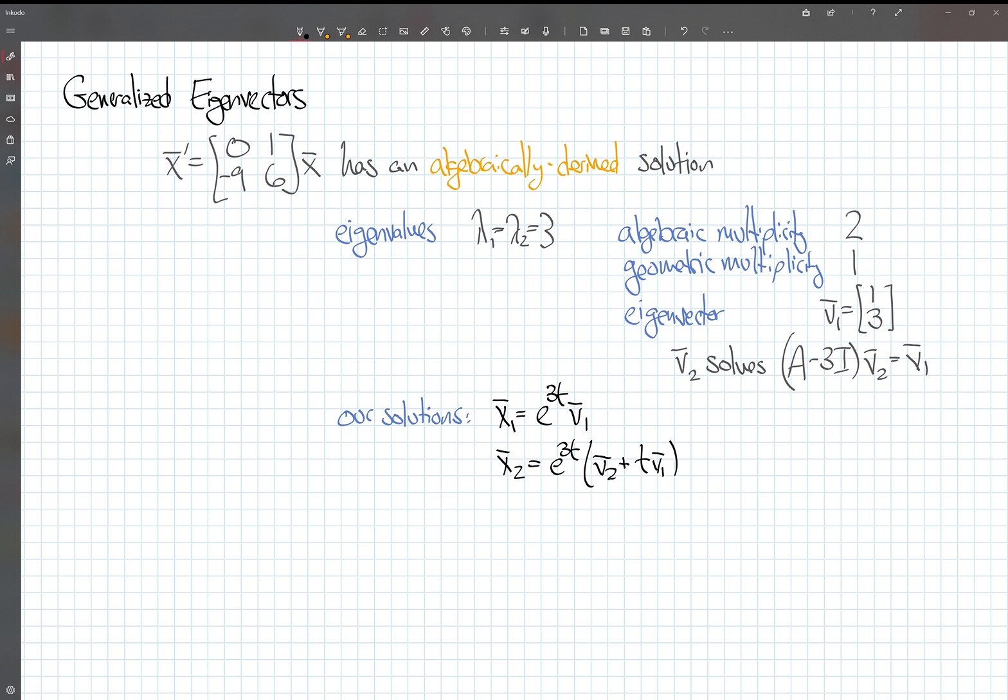It happened to have algebraic multiplicity 2, geometric multiplicity 1. That means we could find one linearly independent eigenvector, namely (1,3). Then we solved this other equation, A-3I times v2 equals v1. We found a v2 that satisfied that and used v1 and v2 to construct our solutions. They look like something times e^(3t) and then a linear polynomial times e^(3t).